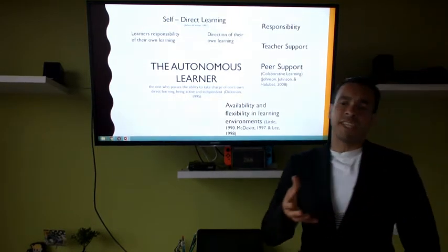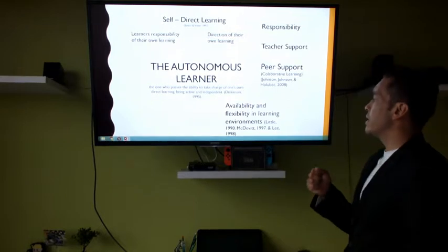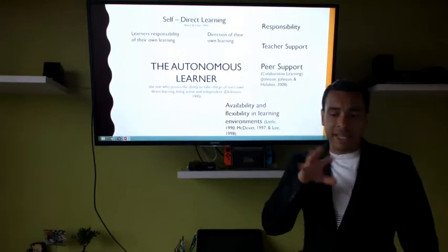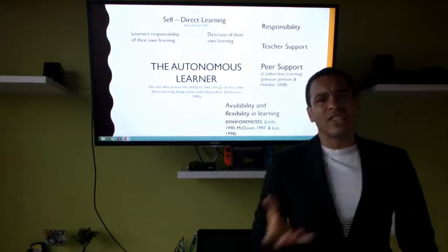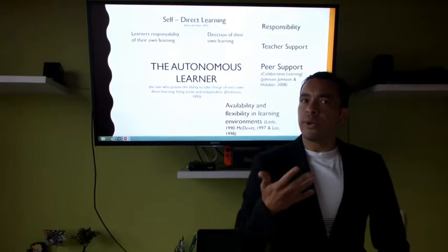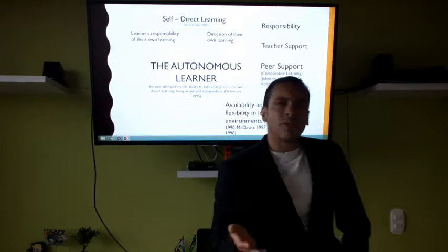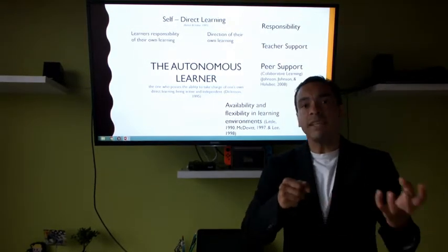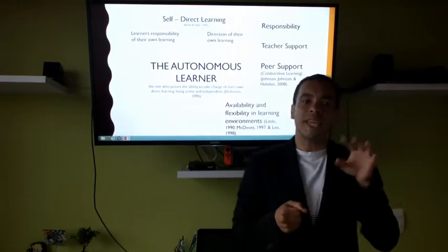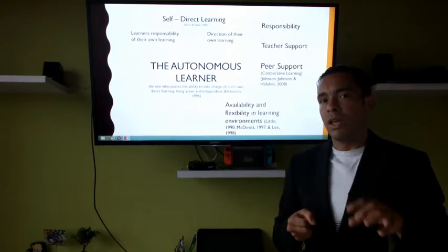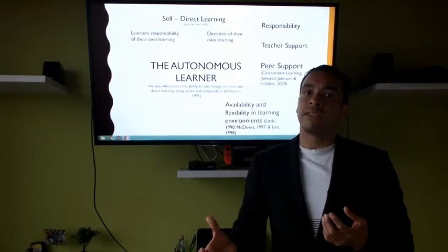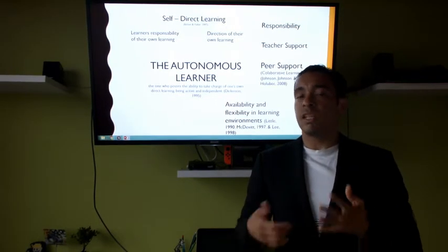Availability and flexibility in learning environments — Little, 1998 — means that everything is changing right now. Learning environments are everywhere. The library is an option, the classroom is an option, but we are talking about inside and outside the classroom. If you just think that learning is going to happen only in class at university, that is not going to be the case, because most of your learning will be carried out outside the classroom. Don't expect everything to happen inside; try to look for different environments and find the best place for you to learn.